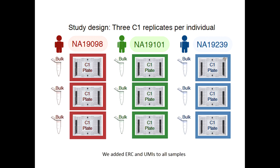We wanted to tackle this head-on by performing a study that immediately allows us to look at batch separately and independently from individual. The design is intuitive: you simply replicate the individual. I'm showing data from a C1; we've done similar work with other platforms. Importantly, to analyze this data in a more standard way, we added ERCC spike-in controls — the typical controls used to normalize single-cell data — and we also added UMIs, the unique molecular identifiers that are becoming more common in single-cell gene expression data.